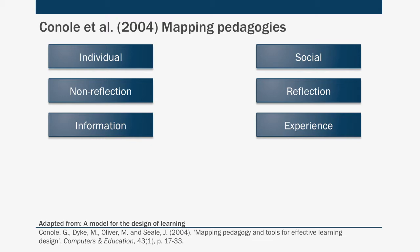First, an individual approach to learning, where the focus of the learning is on the individual. Social — learning through interactions with others. Non-reflection, focusing on memorisation and functional development. Reflection — conscious reflection of experience or understanding, leading towards learning. Information — material or existing knowledge that forms the basis of the learning. And experience — where doing something is the basis for learning.